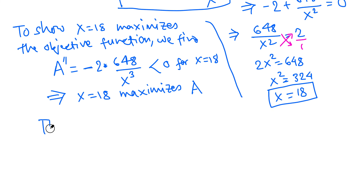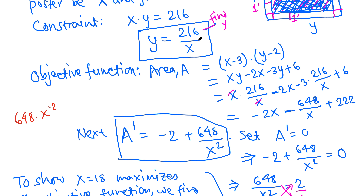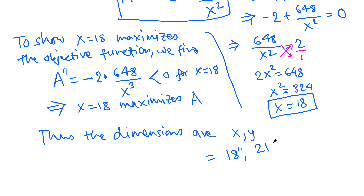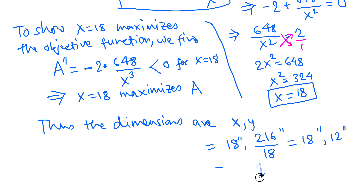Thus the final dimensions are: x equals 18 inches, and y equals 216 over 18, which equals 12 inches. So the dimensions of the poster are 18 inches by 12 inches.